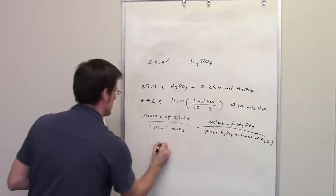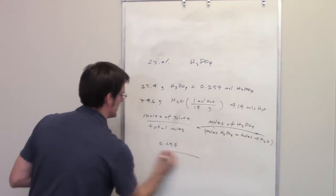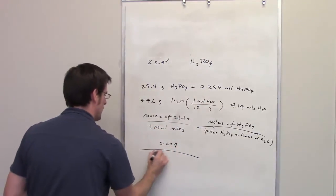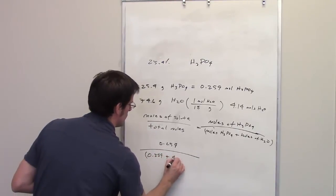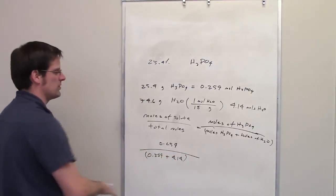So the mole fraction for this is going to be 0.259, that's the total number of moles of phosphoric acid, divided by 0.259 plus 4.14, that's the total moles in the entire thing.